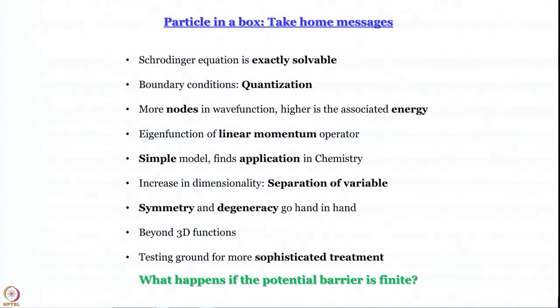In the last module we said we would discuss finite barriers, but in this module let us see how the uncertainty principle is manifested by the wave functions we are now familiar with in particle in a box. To recapitulate: the Schrödinger equation is exactly solvable, boundary conditions lead to quantization — this is the most important lesson from the last three modules — and more nodes in the wave function means higher associated energy, which will come in handy when we talk about atomic and molecular wave functions.